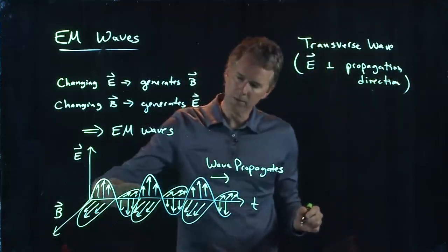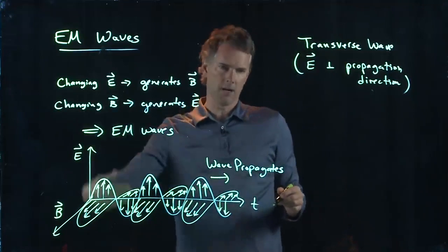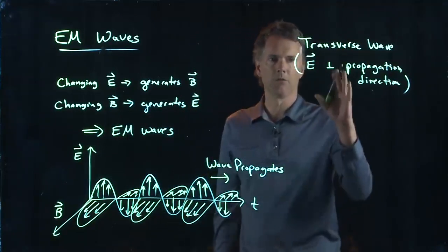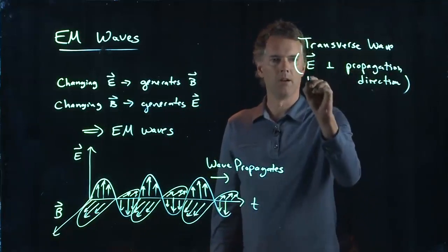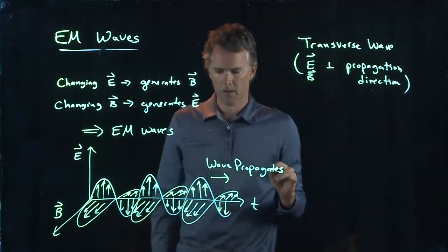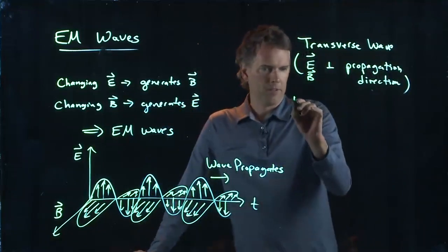So even though the wave is moving this way, the E field is oscillating up and down, the B field is oscillating in and out. Those are both perpendicular to the propagation direction. How fast are these things moving?